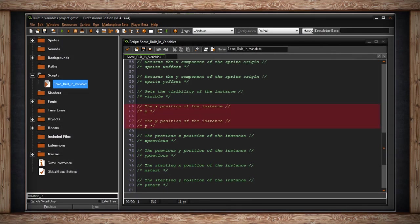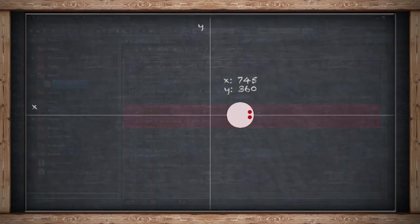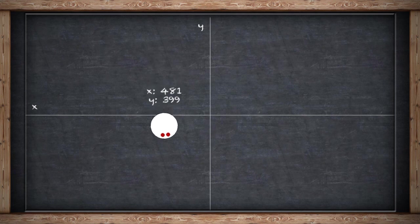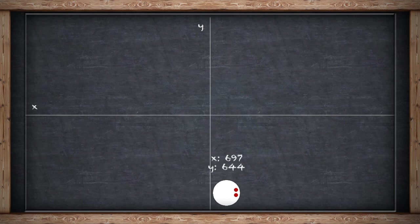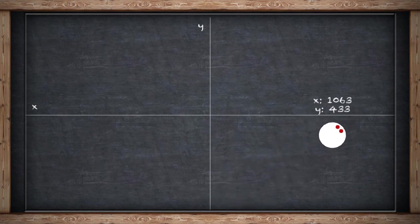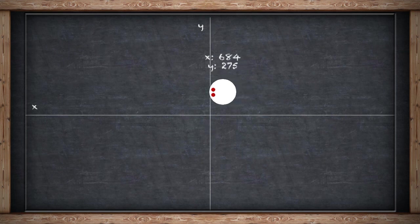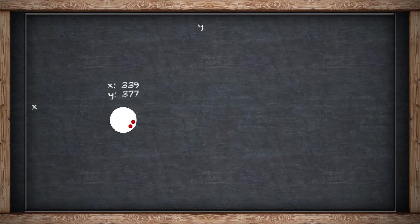X and Y are very simple variables — they are the position of the instance in your room. X is the horizontal axis and Y is the vertical axis. This is read and write, so you can check where your instance is in the room based on the origin point of your sprite. You can also write this value, and it's commonly used to manipulate the position of your instance. For example, X plus equals 5 means every step your X value increases by 5, making it look like your instance is moving 5 pixels to the right every step.